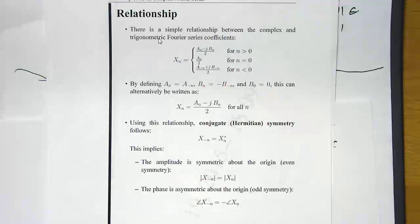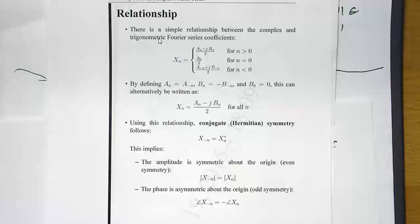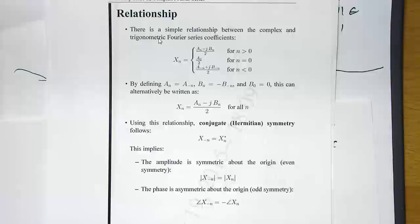Let's go back to relate the complex Fourier coefficients to the trigonometric Fourier coefficients. I had this relationship at the top. If I define a mapping where a of n is a of minus n, and for the cosine terms a of 10 is a of minus 10, and similarly for b of n you set b of n as minus b of minus n, what it allows you to do is combine these three equations together to come out with a single relationship between the trigonometric and the complex Fourier series.